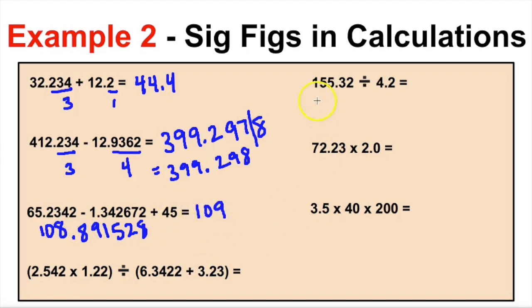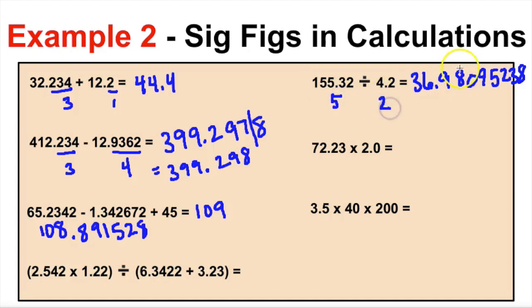Now we're dividing. Taking 155.32 divided by 4.2 gives 36.98095238. If you left your answer like this, it is incorrect. When multiplying and dividing: this number has five sig figs, this has two, so the answer must be rounded to two sig figs. Counting from the left: first sig fig, second — the nine rounds the six up to seven — giving a final answer of 37.